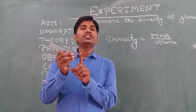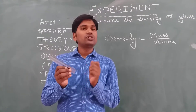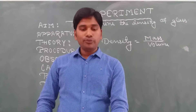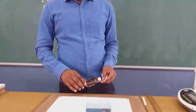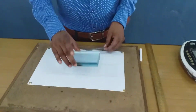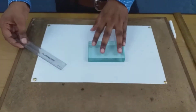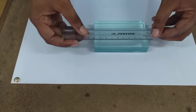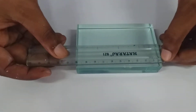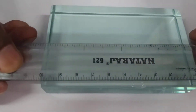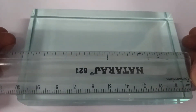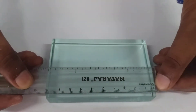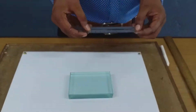Let us start our experiment. First we will determine the volume, and for that we will find the length. To find the length we will use our scale, starting from the zero of the scale to measure. As you can see, the length is 10.1 centimeters.